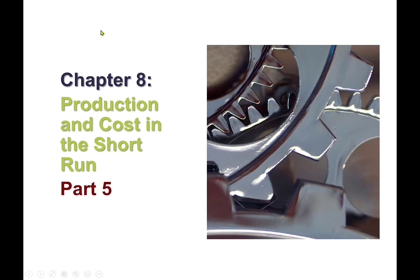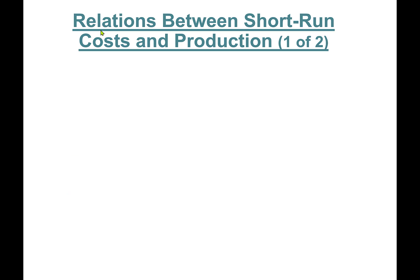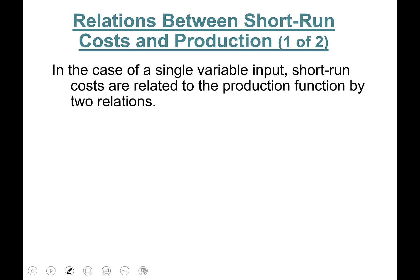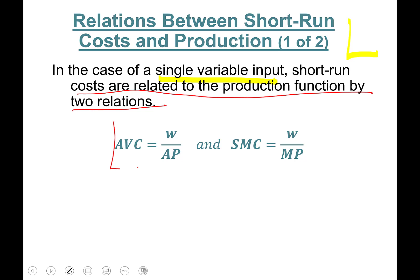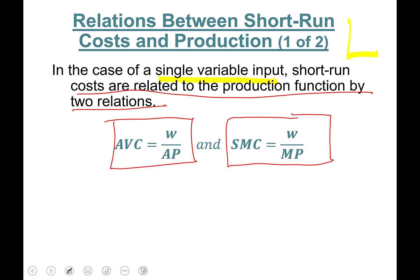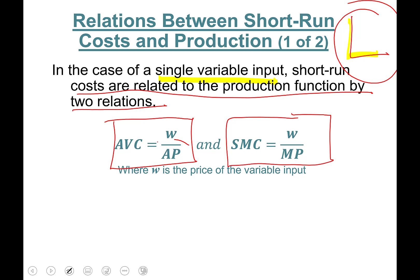Hello everyone, Chapter 8 Part 5. In this part we'll talk about relations between short run costs and production in the case of a single variable input — in this case it's labor. Short run costs are related to the production function by two relations: average variable cost equals wage divided by average product, and marginal cost equals wage divided by marginal product. W is the price of the variable input, and average product and marginal product are the average and marginal product of labor.